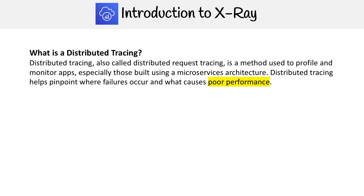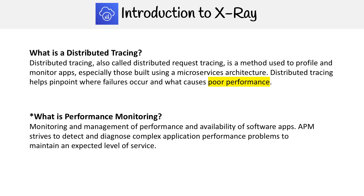Performance monitoring is also within the scope of X-Ray. Traditionally, we used application performance monitors — APMs — which referred to traditional architecture where you had a single EC2 and all of your business logic was handled in one specific application. APM — monitoring and management of performance and availability of software apps — strives to detect and diagnose complex application performance problems to maintain an expected level of service. You could say that X-Ray is both, but it's more accurate to call it a distributed tracing system.